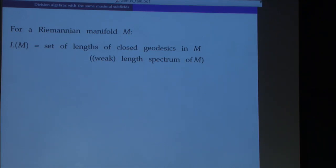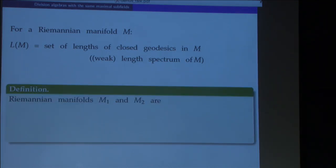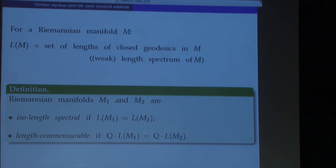Given a Riemannian manifold M, by L(M) we denote the set of lengths of all closed geodesics in M — the so-called weak length spectrum. This is just a sequence of numbers without multiplicities. Riemann manifolds M1 and M2 are said to be isolength spectral if they have the same weak length spectrum. We say that these manifolds are length commensurable if the set of all rational multiples of the lengths of all closed geodesics in one of them coincides with the corresponding set for the other. We don't count multiplicities; L(M) is just a subset of R.